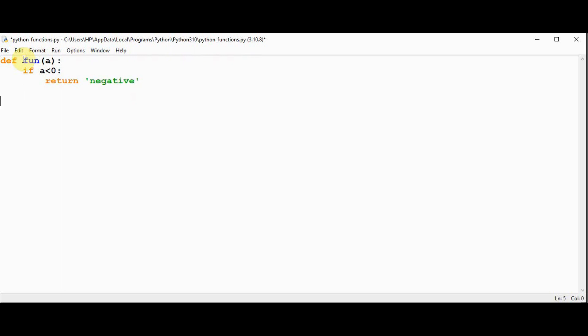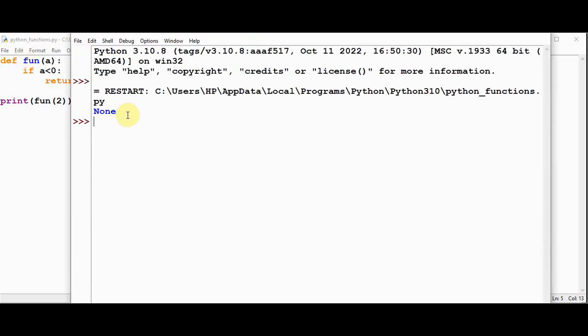I'm calling that function, print function, by passing 2 as an argument. In this case it returns None as the output.